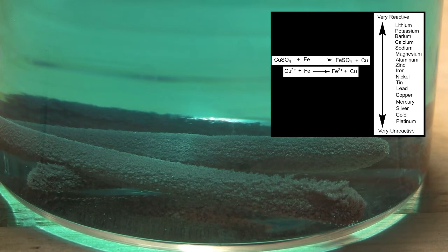In this series, iron is more reactive than copper, so the iron will reduce the copper from copper 2+ to copper metal, while the iron becomes oxidized, becoming iron 2+.